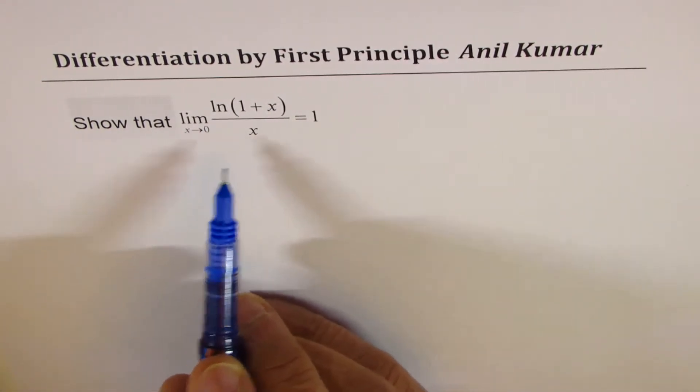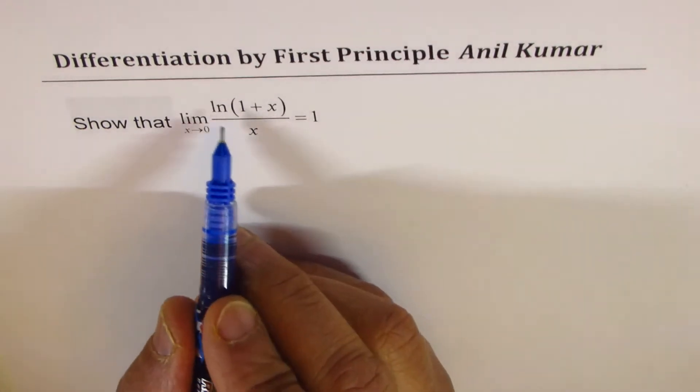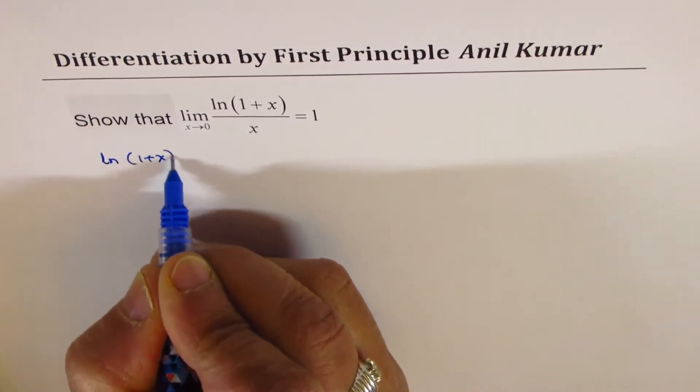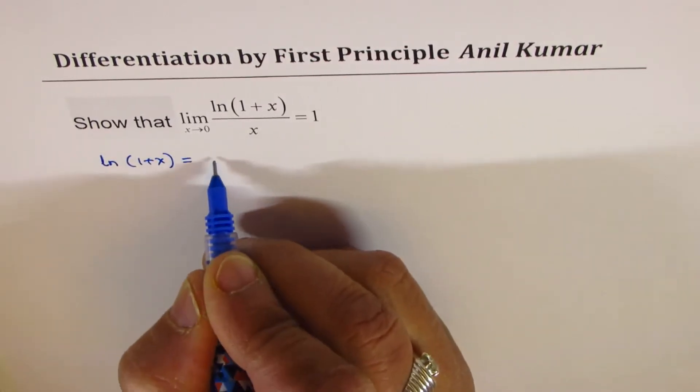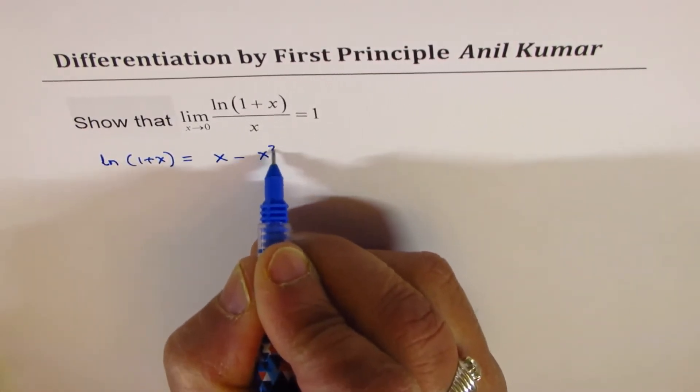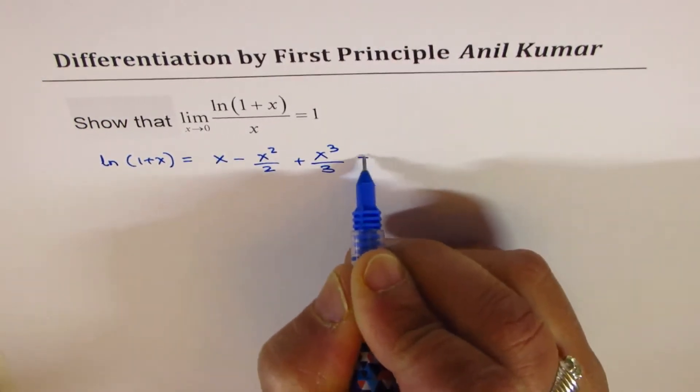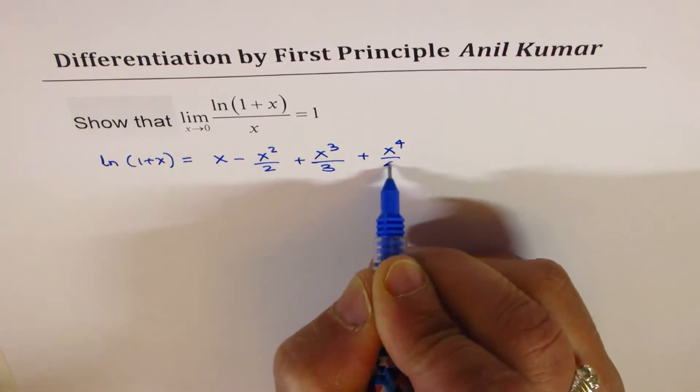Now here we are going to use the value of ln(1+x) which can be written as x minus x squared over 2 plus x cubed over 3 plus x to the power of 4 over 4.